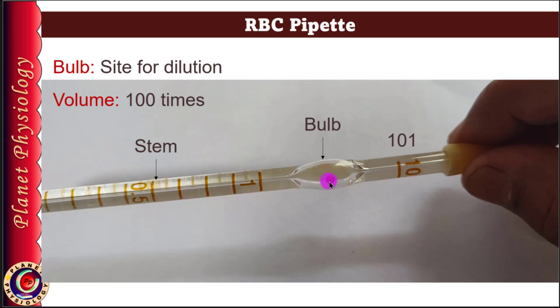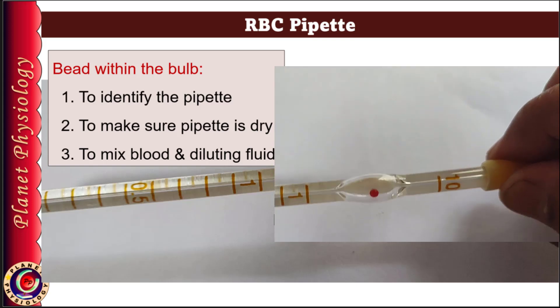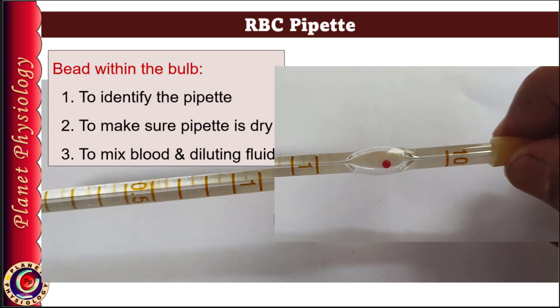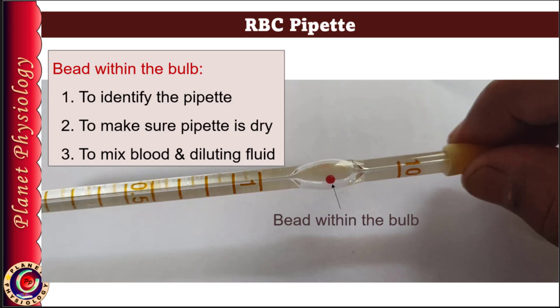The bulb has a small red-colored bead within it, which serves three important purposes. First, identification of the pipette — the RBC pipette always has a red-colored bead. Second, it acts as a dryness indicator. As you can see, the bead moves freely within the bulb when the pipette is tilted. This movement indicates the pipette is dry, which is crucial before starting to collect the blood sample. If the pipette is wet, the bead will stick to the wall of the bulb and will not move freely. The third function of the bead is to mix the contents — the blood sample and diluting fluid — ensuring an even distribution of cells for counting.